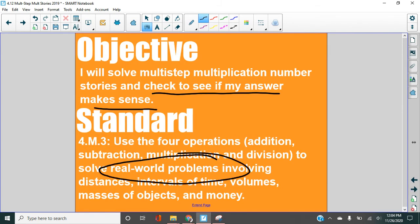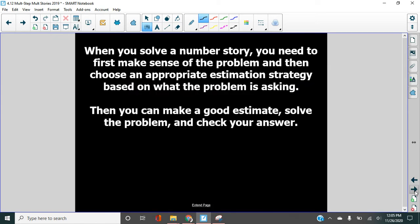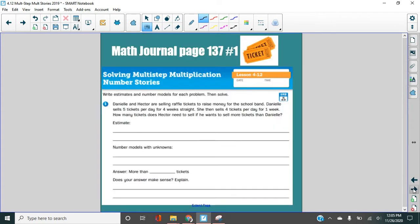Okay. We're in here solving real world problems today. All right. When you solve a number story, you need to first make sense of the problem and then choose an appropriate estimation strategy based on what the problem is asking. Okay. And we'll talk a little bit more about that as we work on number one here. Go ahead and open in your book to page 137. All right. We're going to write some estimates here. All right. That's not something that we did on the first one. We weren't asked to, but we are here.